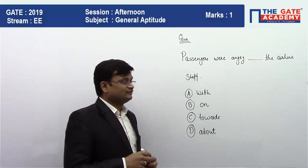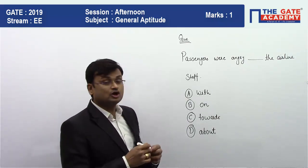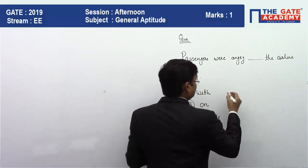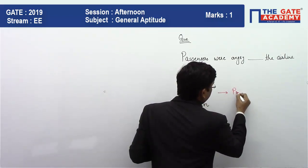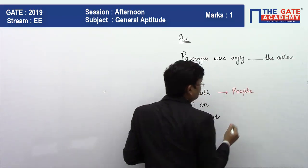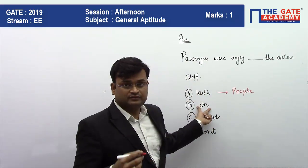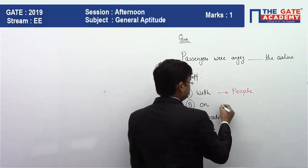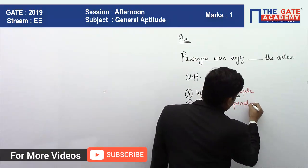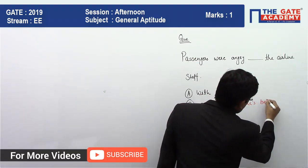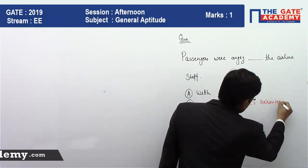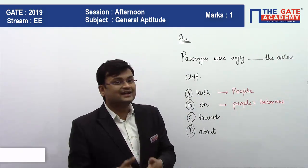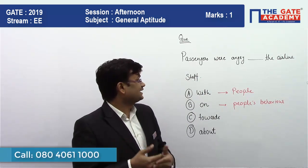The answer is: whenever you talk about anger and want to use 'with,' generally 'with' is used with people — 'angry with people.' But 'on' is used when anger is directed at someone's behavior — 'angry on people's behavior.' In this question, it asks 'passengers were angry dash the airline staff,' which is directly talking about people.